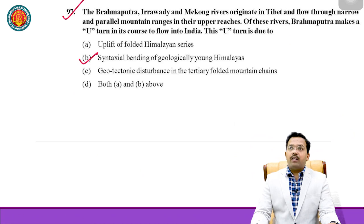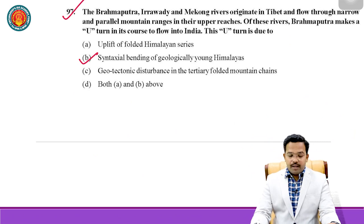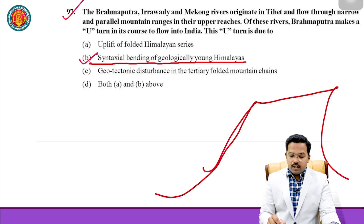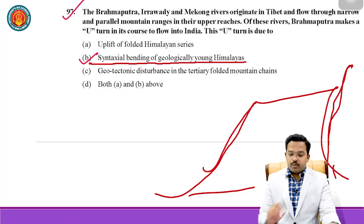Question 97: The Brahmaputra, Irrawaddy, and Mekong rivers originate in Tibet and flow through narrow and parallel mountain ranges in their upper reaches. Of these rivers, the Brahmaputra makes a U-turn in its course to flow into India. This U-turn is due to the syntaxial bending of the geologically young Himalayas, which is responsible for the Brahmaputra's course.